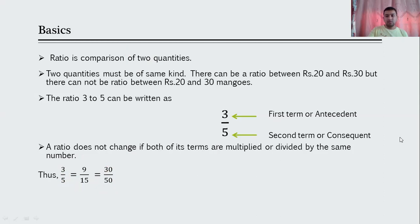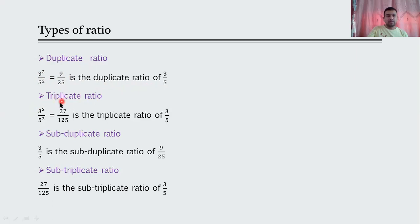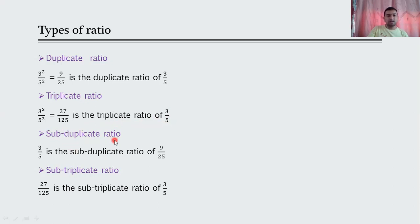Now let's see different types of ratios. First is duplicate ratio — if you square the numerator and denominator. For example, 3 upon 5 gives 9 upon 25 as the duplicate ratio. Next is triplicate ratio — if you cube numerator and denominator: 3 cubed is 27 and 5 cubed is 125, so 27 upon 125 is the triplicate ratio of 3 upon 5.